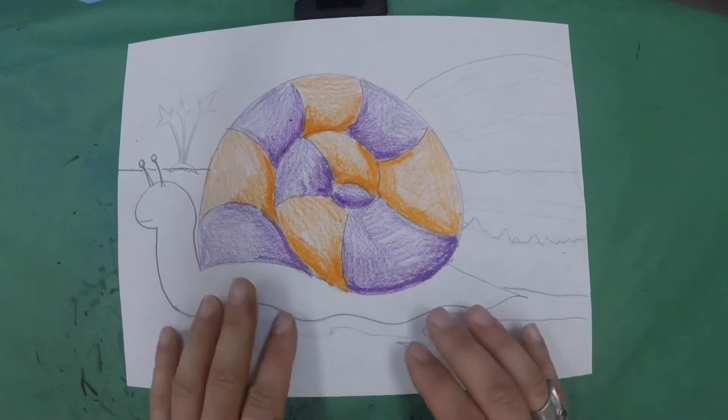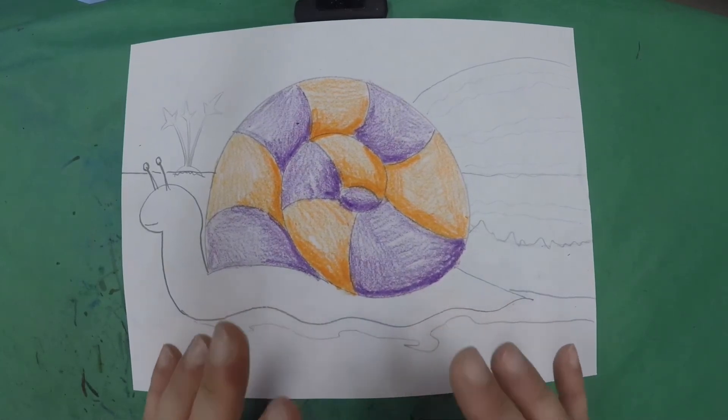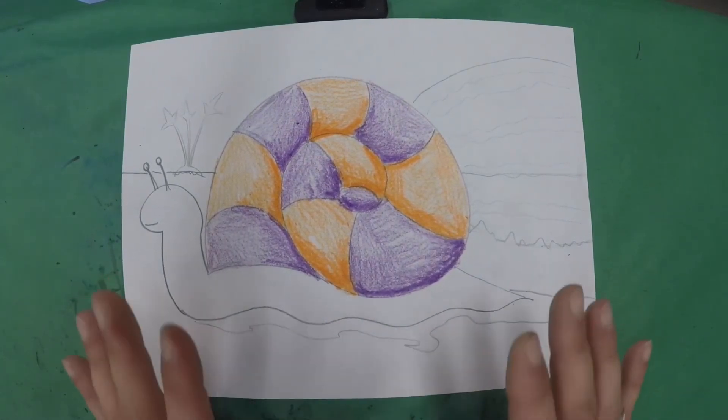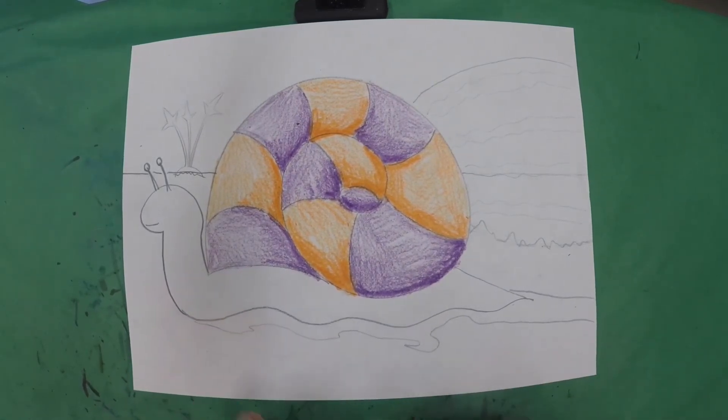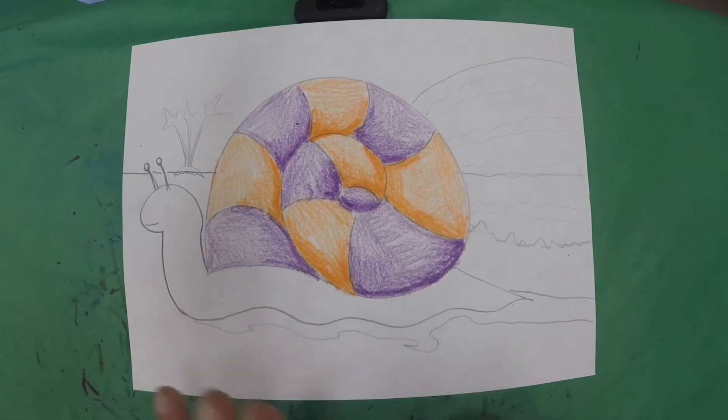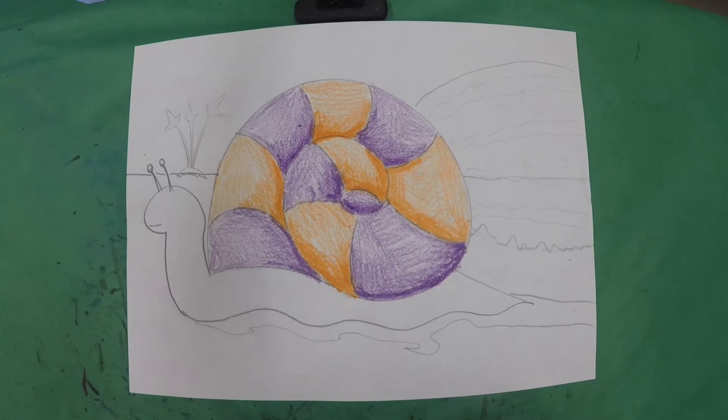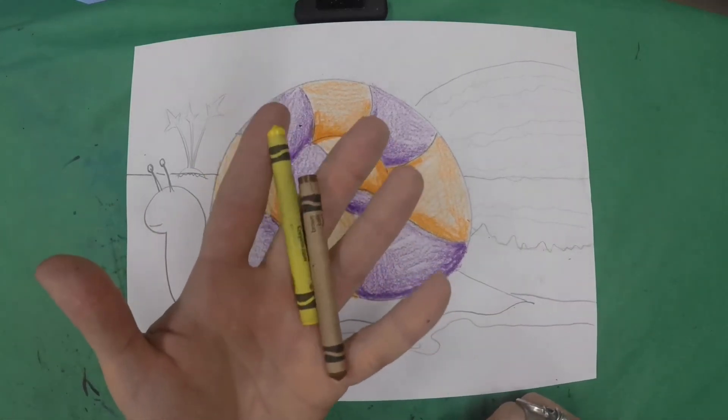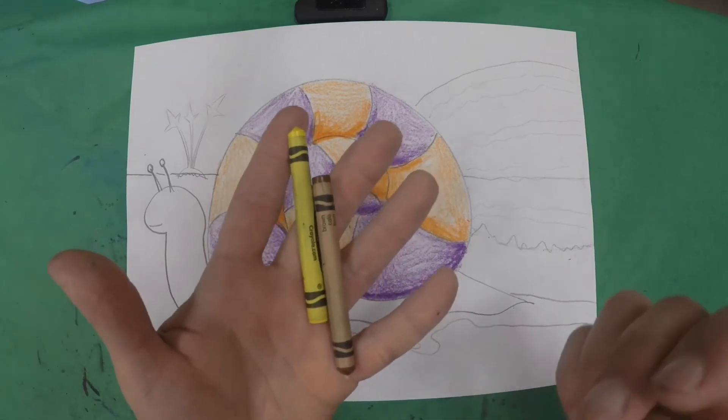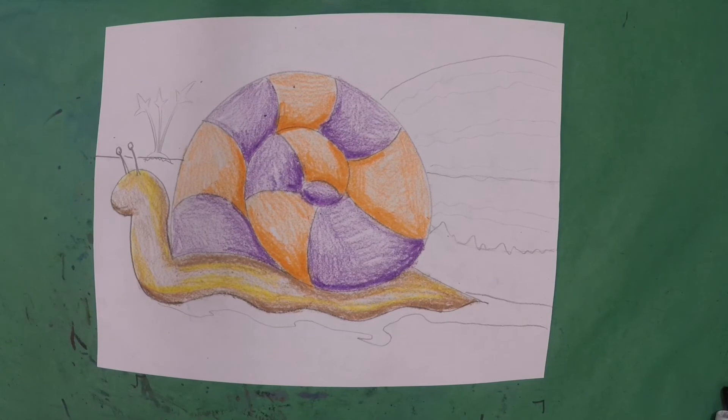So the next thing we want to do is color the snail's body itself. Now most snails, not all of them, but a lot of them, are kind of a brownish, yellowish, greenish color. If you want to do yours that way, you can, but you can make your snail's head and foot any color you want to be. I think I'm going to go though with that little kind of slightly more traditional mix of brown and yellow. So there we've got our snail's face and foot colored.